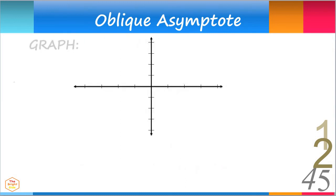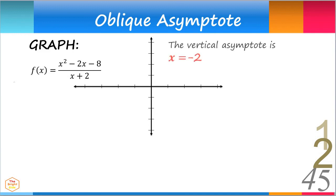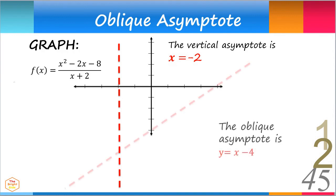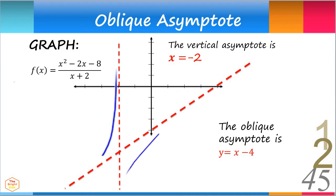Let's graph the rational function. We have previously solved for the vertical asymptote, which is x equals negative 2, and the oblique asymptote, which is y equals x minus 4. The curve runs closer and closer to both the vertical asymptote x equals negative 2 and the oblique asymptote y equals x minus 4, but will never intersect nor touch both lines.